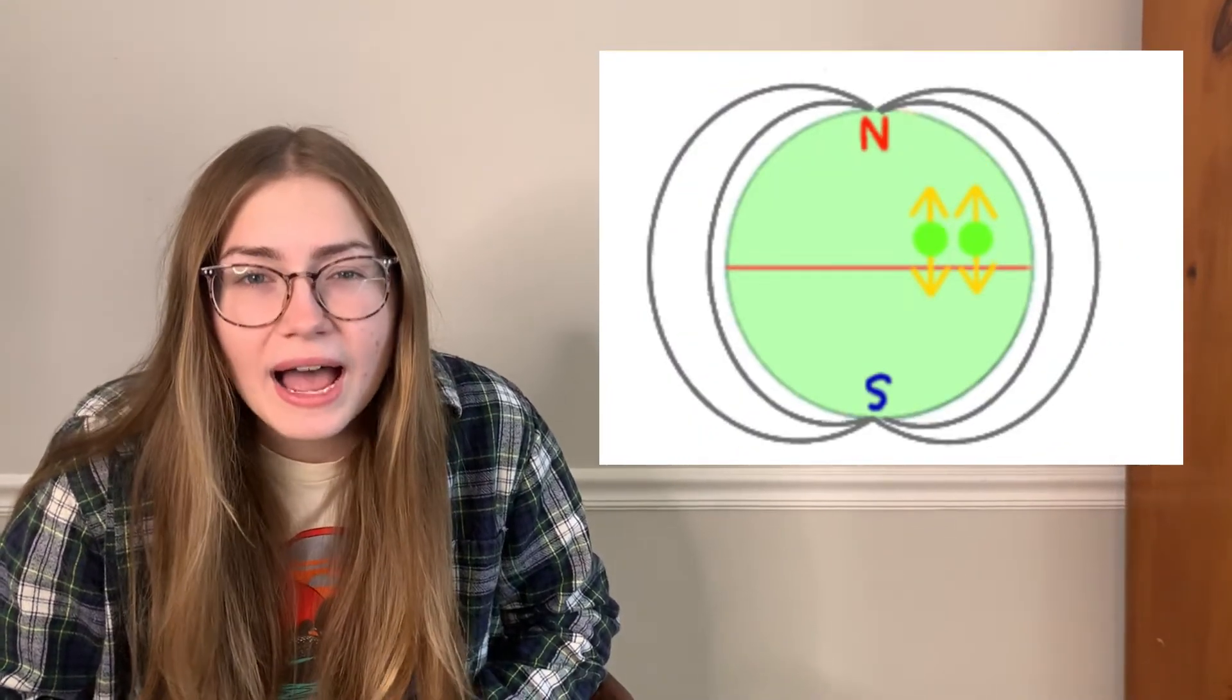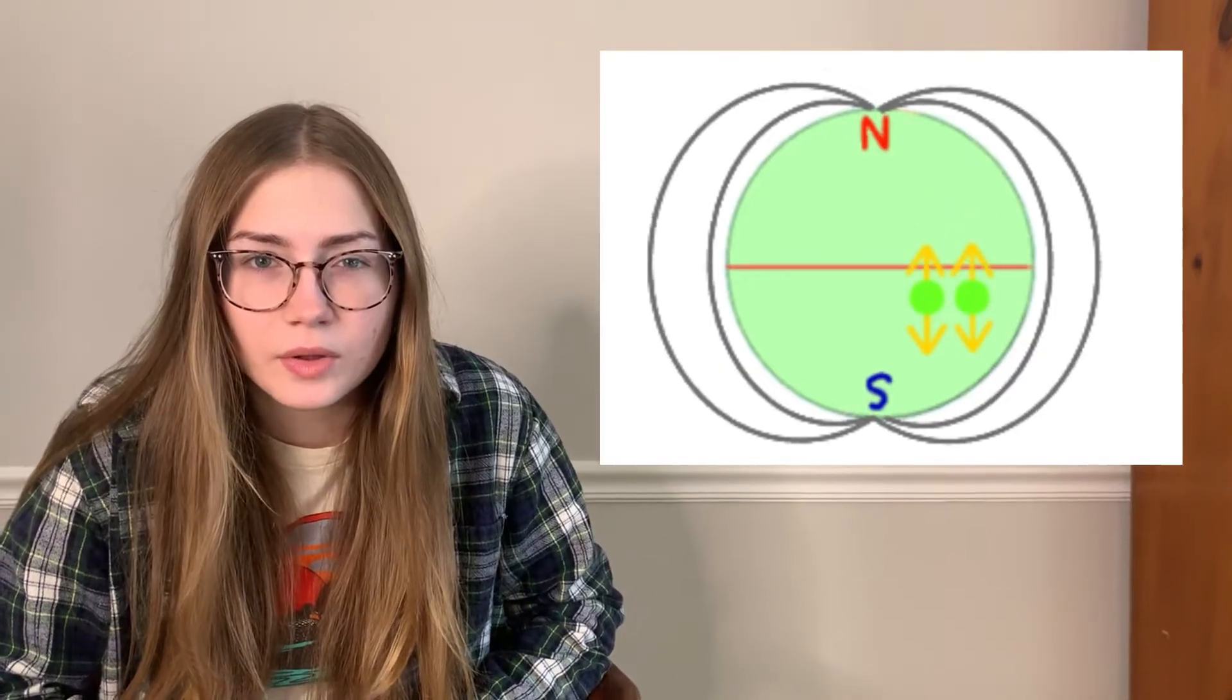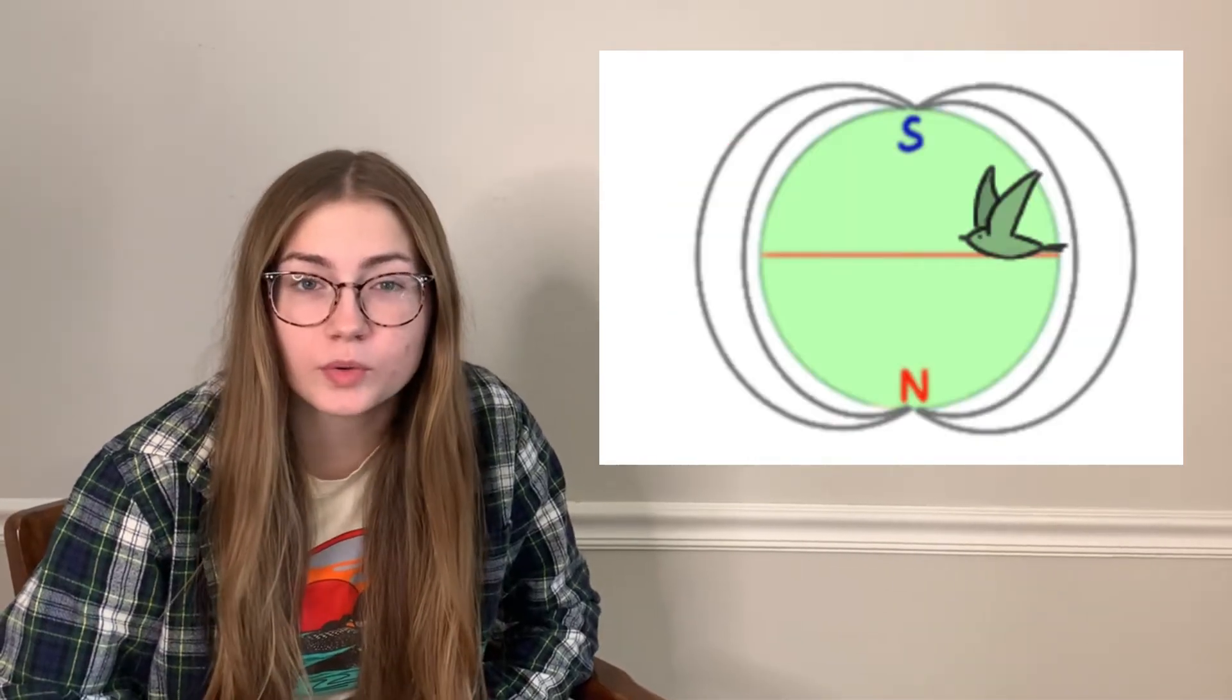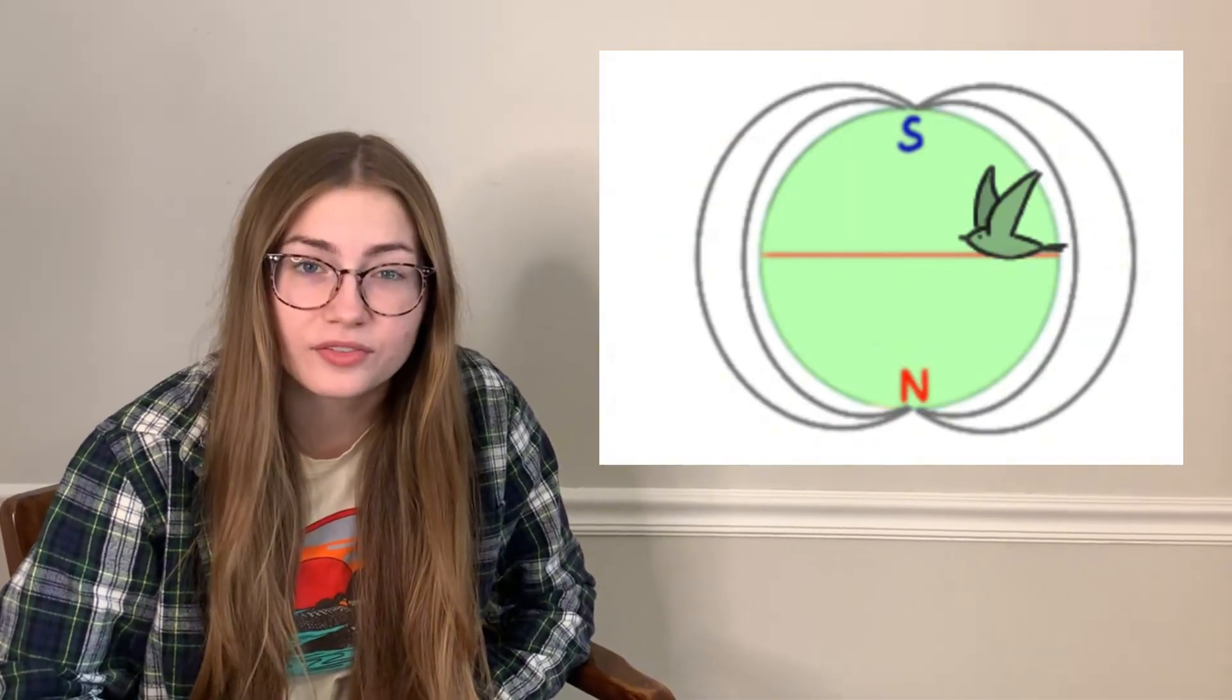In this state, the radical pair is highly sensitive to the Earth's magnetic field, and it influences the spin's outcome. The final spin state determines what kind of combinations will happen. These combinations cause the reactions which tell the bird where it is in alignment with the magnetic field.